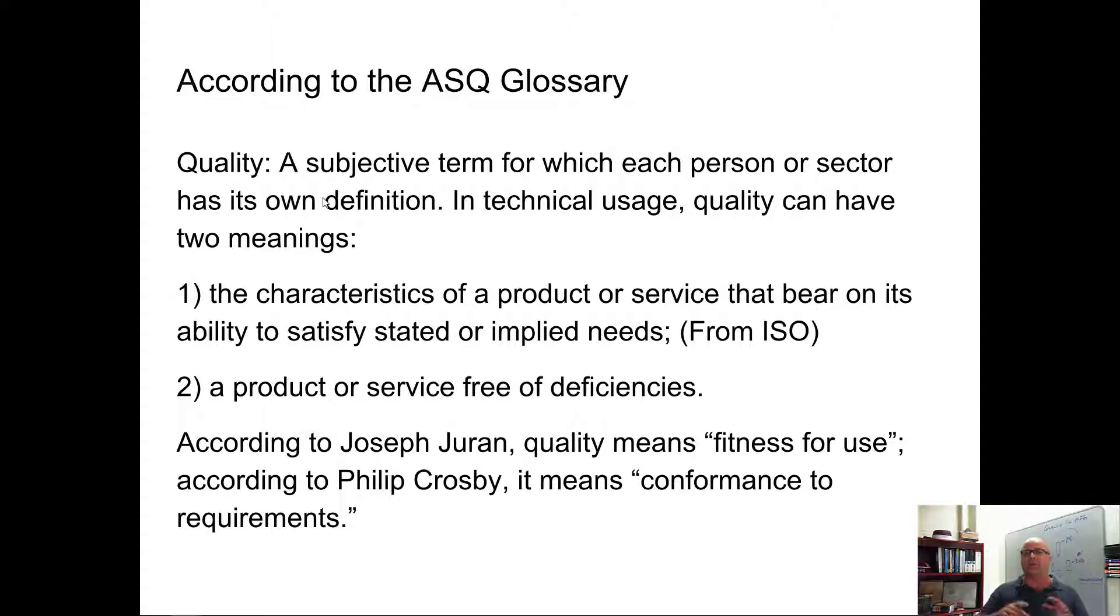And two, a product or service free of deficiencies. So when we have a quality product, it doesn't have any deficiencies. Now, they go on, they say this, Joseph Juran in his book said that it's fitness for use. Phil Crosby says that it's conformance with requirements.